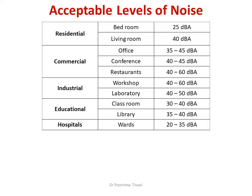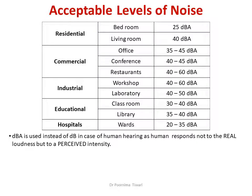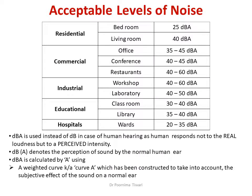This table shows the acceptable level of noise in different common settings — residential settings, hospitals, and commercial areas. Instead of decibels, dB(A) has been used as a unit. dB(A) is used because it is not just loudness that affects human hearing, but also the response of the human ear to that loudness. These are combined and a weighted curve called Curve A is made. The effect of sound on the ear has been taken into account, making dB(A) a better measure of sound intensity than plain decibels.